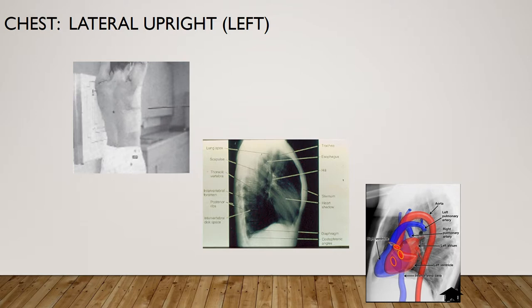Here is a left lateral upright chest x-ray. The patient is going to be erect. Always make sure the left side is against the image receptor so that you get a better look at the heart. The arms are going to be raised and, if possible, crossed above the head with the chin up. Make sure they are in a true lateral with no rotation or tilt. Check the PA x-ray to see if they have scoliosis — if so, make sure the sternum is lateral and don't focus as much on the vertebral column.